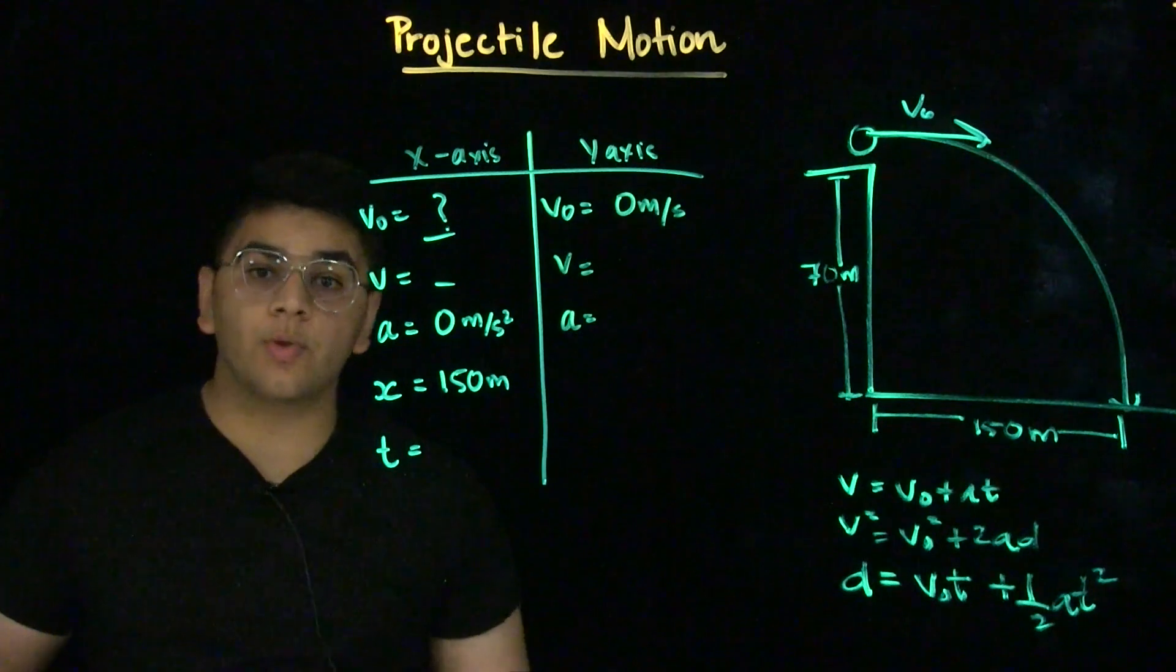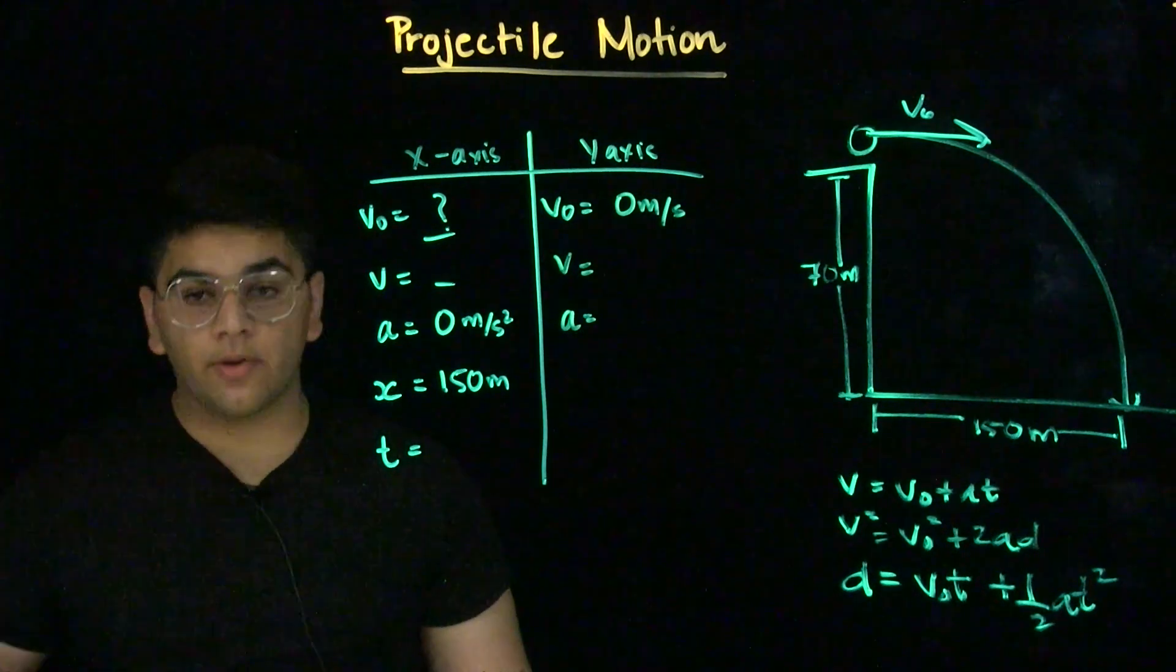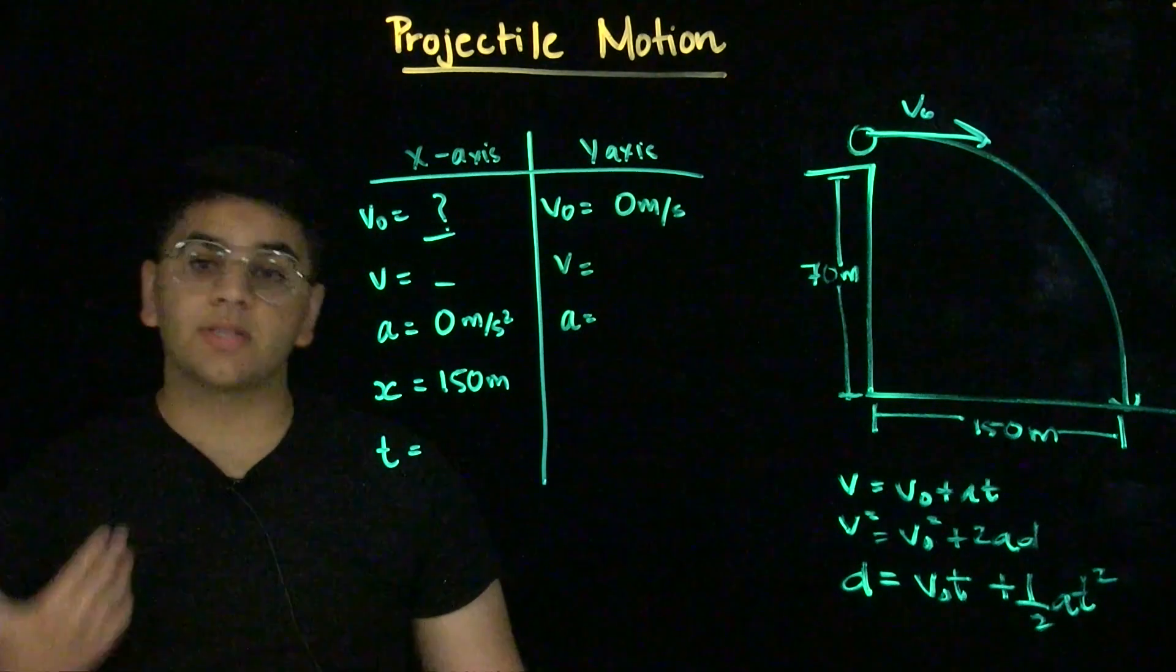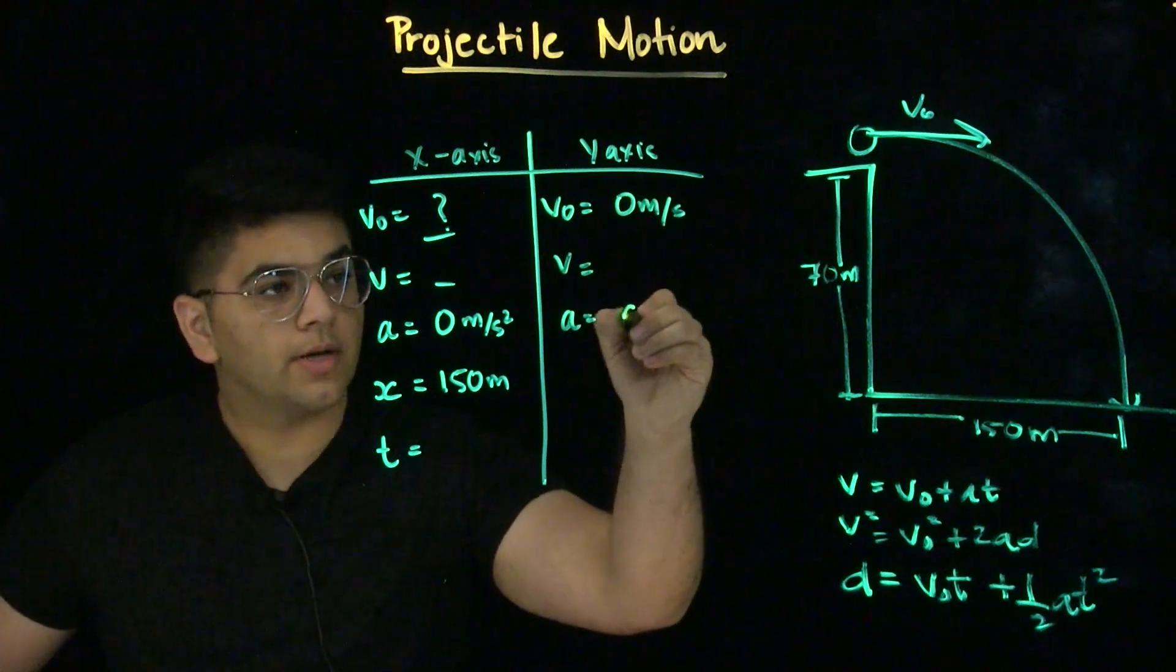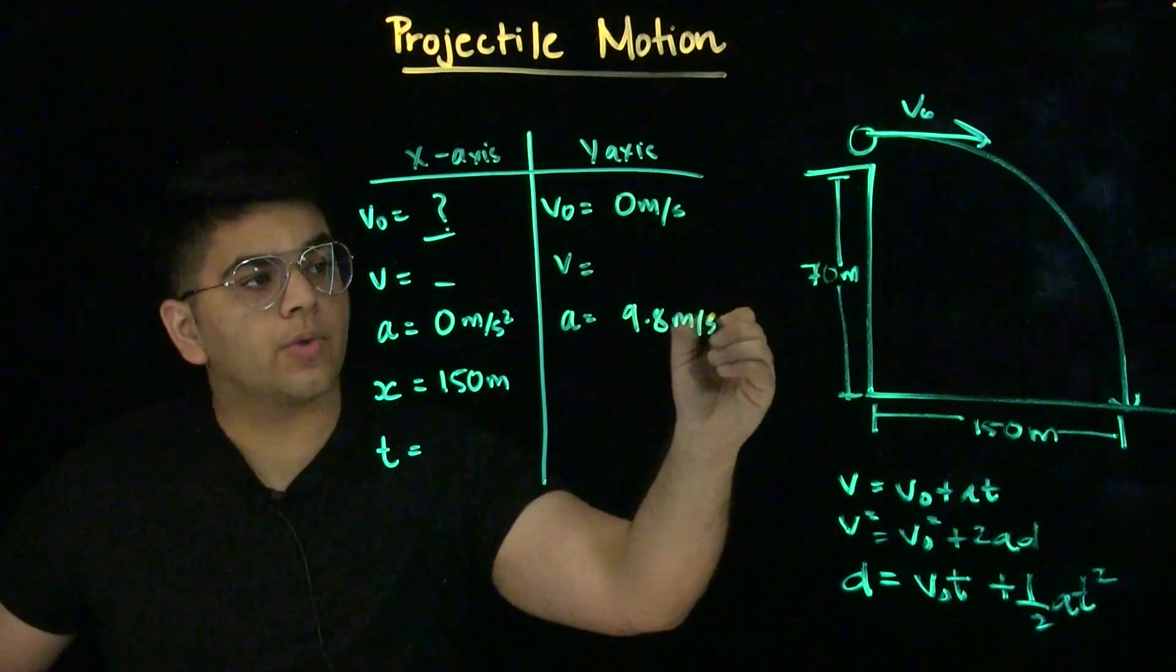Acceleration. Since the rock is on Earth, we know the acceleration will be due to gravity. And gravity always exerts the same amount of acceleration, which is 9.8 meters per second squared.